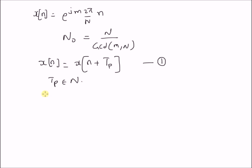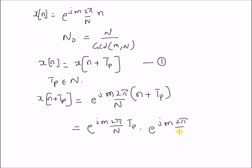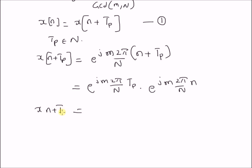Now let us derive the value of the signal at n + Tp. It is x(n + Tp), which equals e^(j * m * 2π/N * (n + Tp)), which equals e^(j * m * 2π/N * Tp) multiplied by e^(j * m * 2π/N * n). We can see that this second component is equal to the original signal x(n), so x(n + Tp) = x(n) multiplied by e^(j * m * 2π/N * Tp).